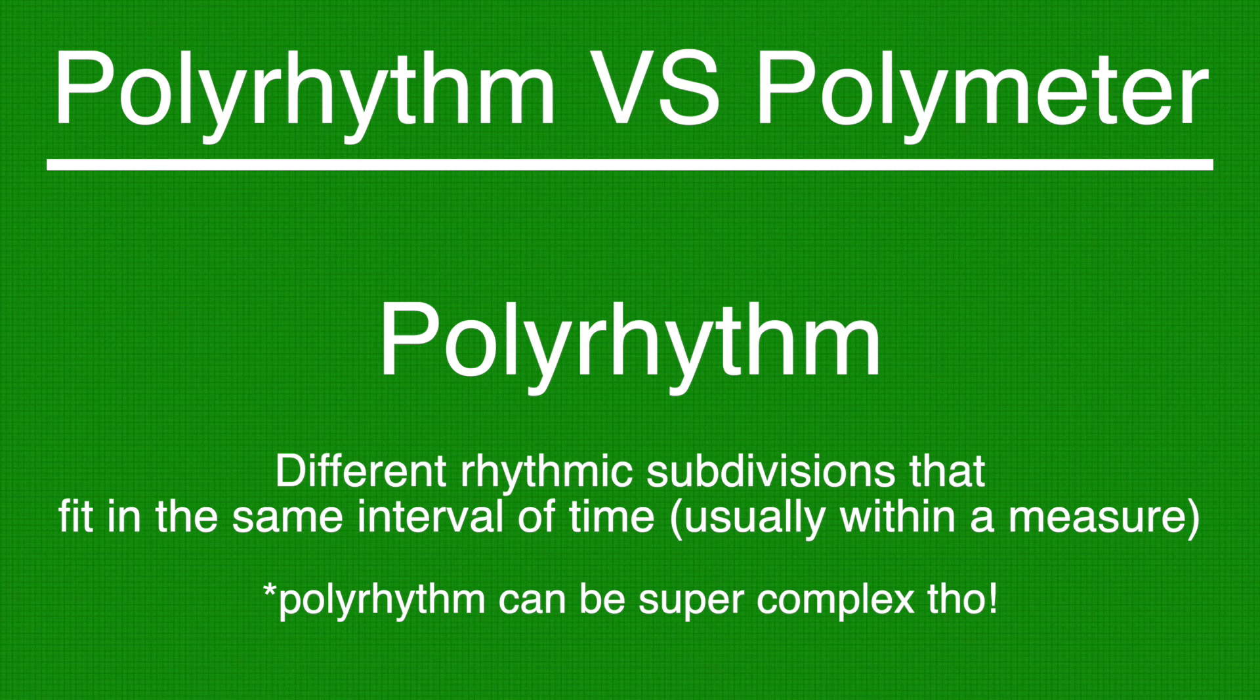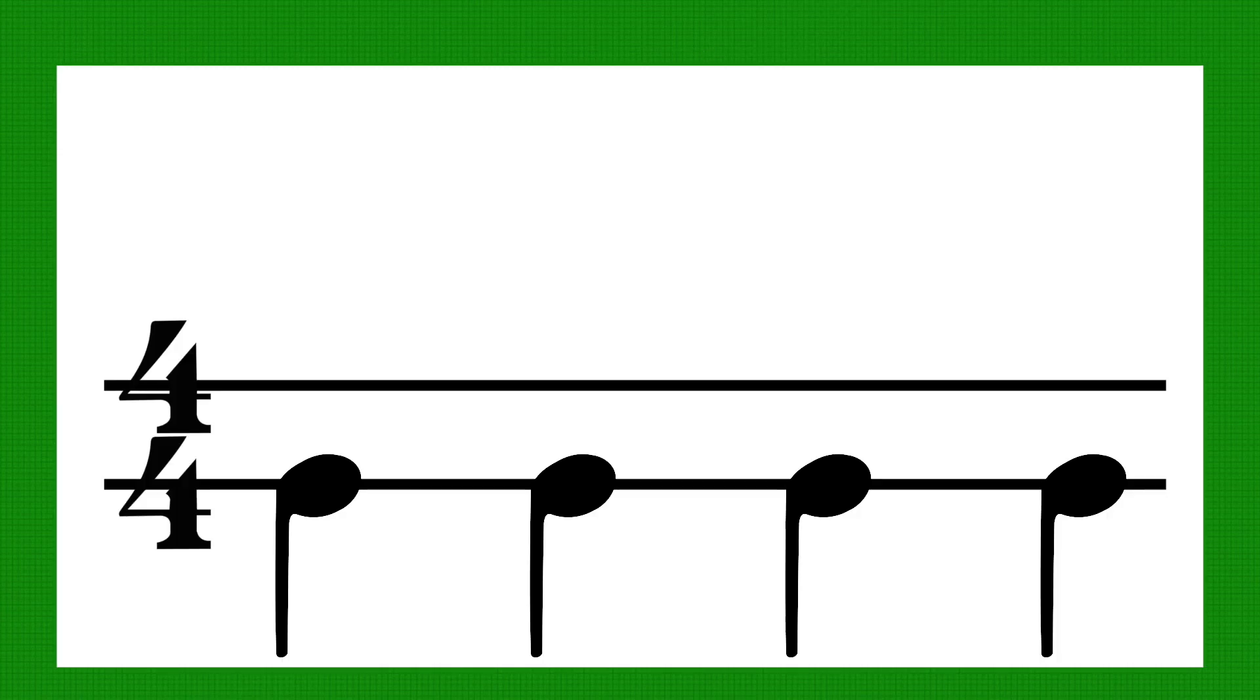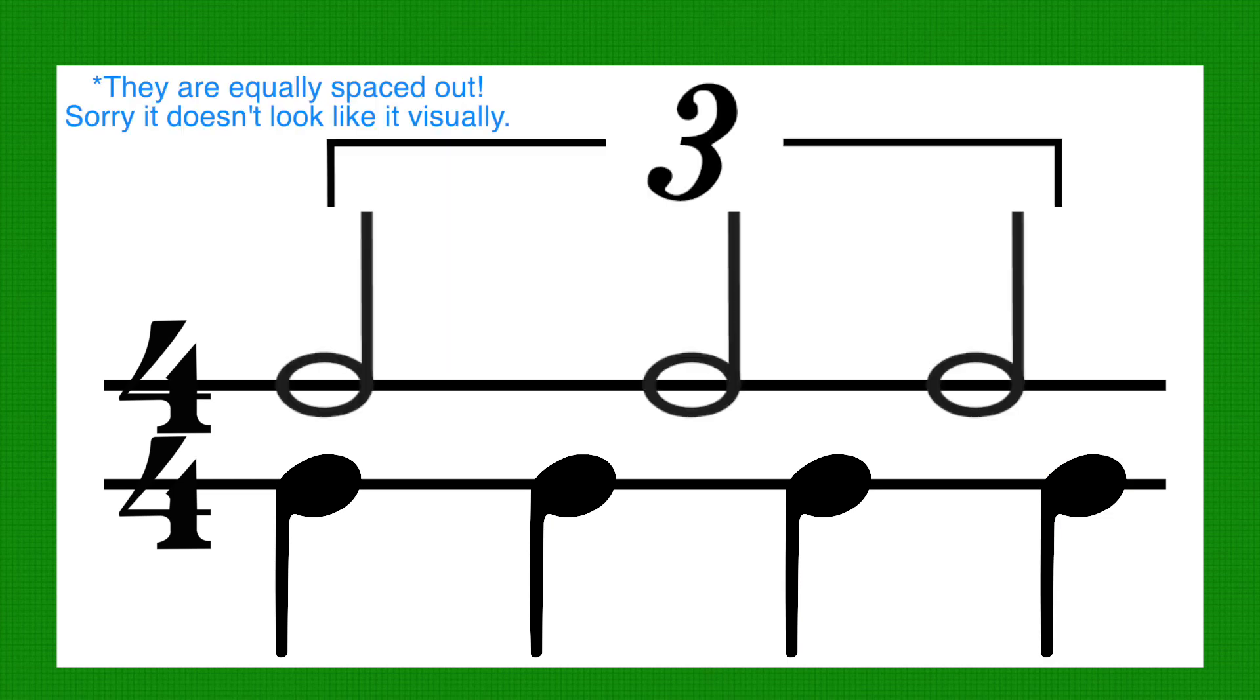An example will explain this much better. So we have a quarter note kick drum in 4-4. And we can introduce polyrhythm by layering a triplet hi-hat. So in the same amount of time that kick drum is played four times within one measure, hi-hat will be played three times.